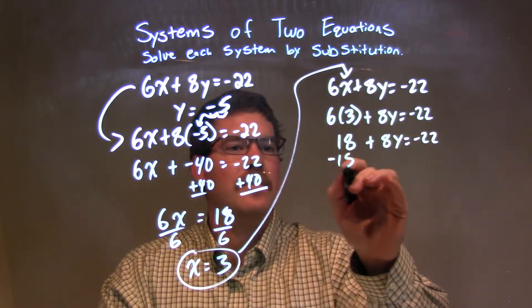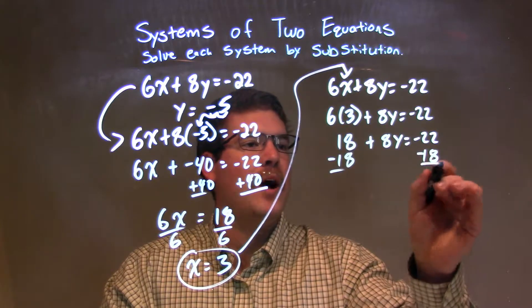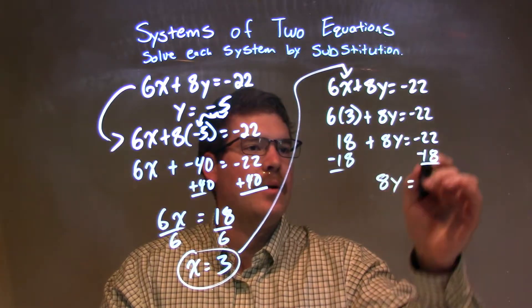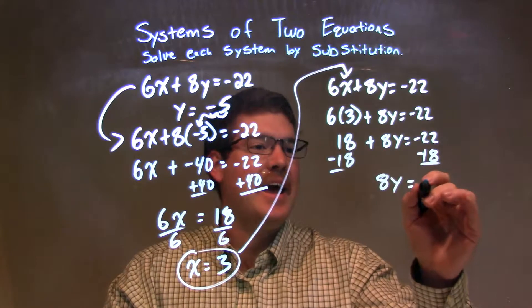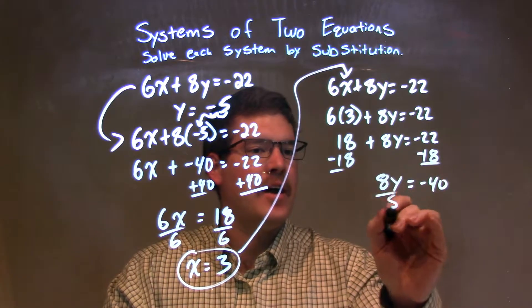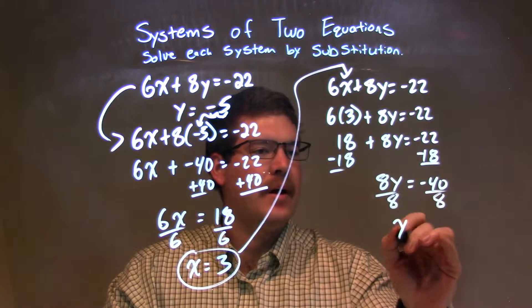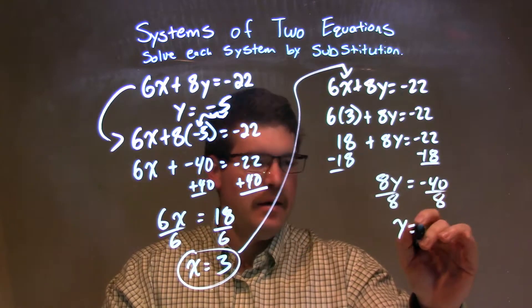We subtract the 18 from both sides. We get 8y by itself. 8y equals negative 22 minus 18, which is negative 40. And, divided by 8 on both sides, y is by itself, negative 40 divided by 8, negative 5.